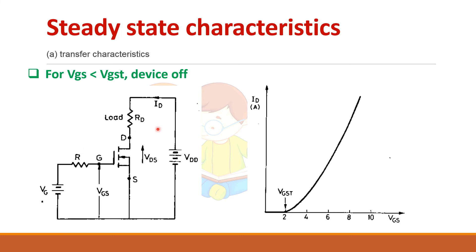Let us see about the transfer characteristics, which is drawn between the drain current and the gate-source voltage. Until the threshold gate-source voltage, there will be no drain current because the N channel will not be created until that threshold voltage is reached. After that, the N channel starts to build up. If you increase the gate-source voltage, drain current will increase continuously. Till this threshold voltage, the device will be in the off state.